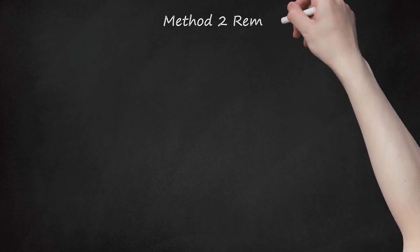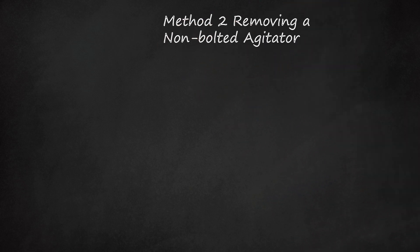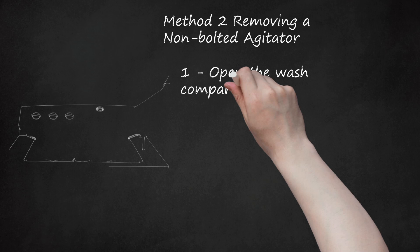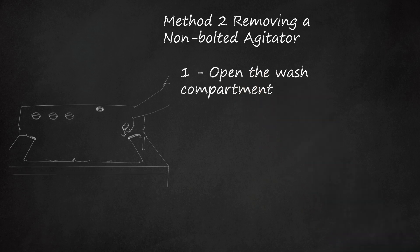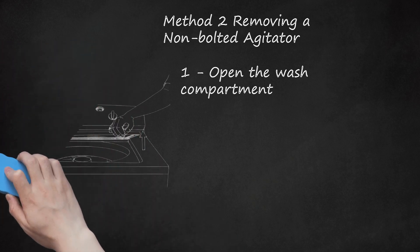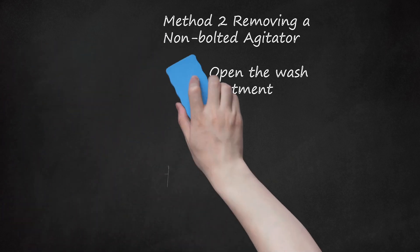Method 2: Removing a Non-Bolted Agitator. Step 1: Open the Wash Compartment. Many older models of GE washing machines, specifically those made before 1992, have agitators that aren't secured in place with a bolt. This means that you don't necessarily need any special tools to remove the agitator, though you may if chemical buildup has caused it to become stuck in place. In this case, see the section on stuck agitators below. Before beginning, for your safety, be sure to unplug the machine as above.